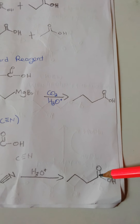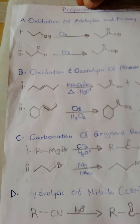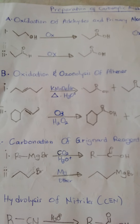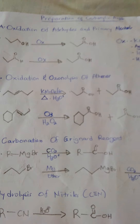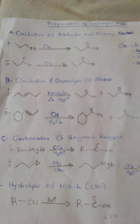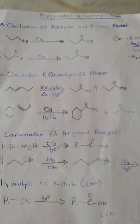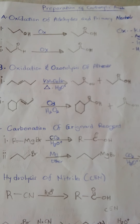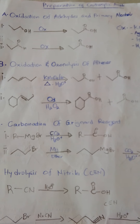So that is basically how carboxylic acids are synthesized. The four methods covered are: oxidation of aldehydes and primary alcohols, oxidation and ozonolysis of alkenes, carbonation of Grignard reagents, and hydrolysis of nitriles.